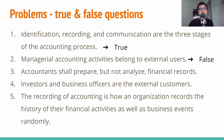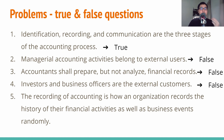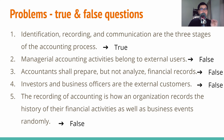The third question: accountants shall prepare but not analyze financial records — true or false? The answer is false, because an accountant's role includes preparing, analyzing, and recording economic events chronologically. The fourth question: investors and business officers are external users — true or false? The answer is false, because business officers are not external users. The fifth question: the recording of accounting is how an organization records the history of their financial activity as well as business events randomly — true or false? The answer is false, because the economic events must be recorded chronologically, not randomly.